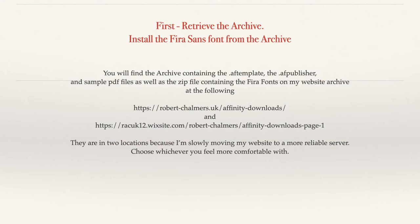First, retrieve the archive and install the Fira Sans font which is contained in the archive. You'll find the archive containing the AF template, the AF Publisher and sample PDF files, as well as a zip file containing the Fira fonts. They're on my website at those addresses — you can pause the video and copy them down. They're in two locations because I'm slowly moving my website to a more reliable server.